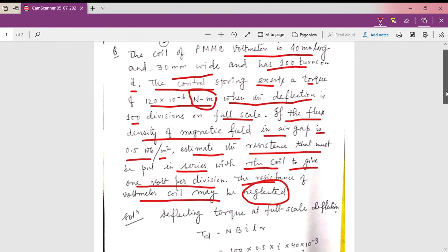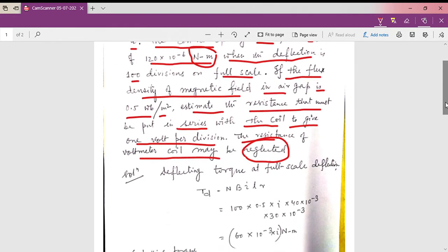Now if we go for a solution of this numerical, we know that the deflecting torque at full scale deflection TD is equals to N B I L R. This is the formula of the deflecting torque.